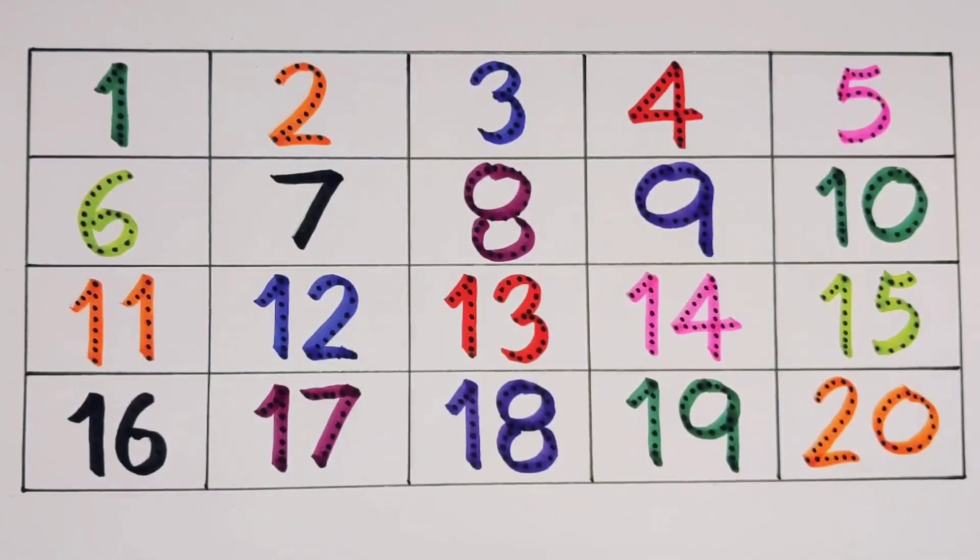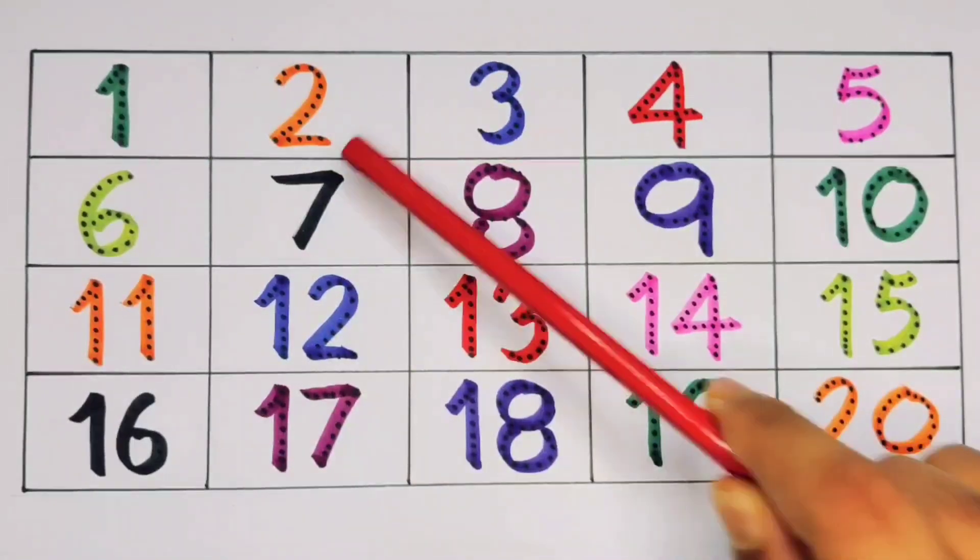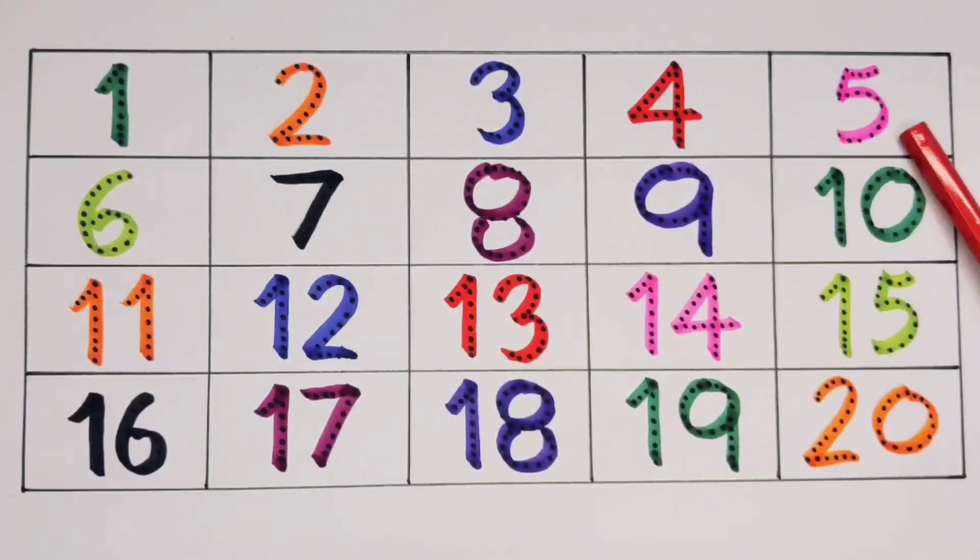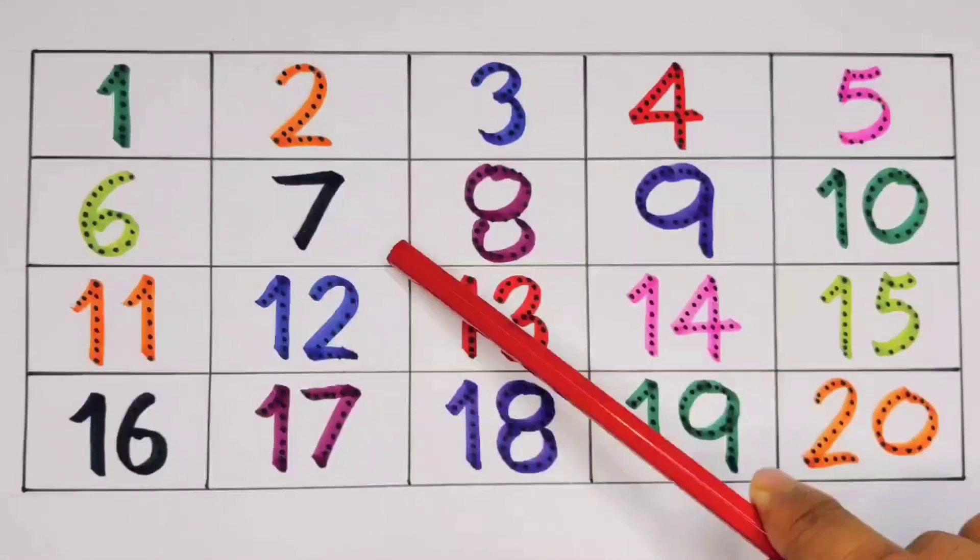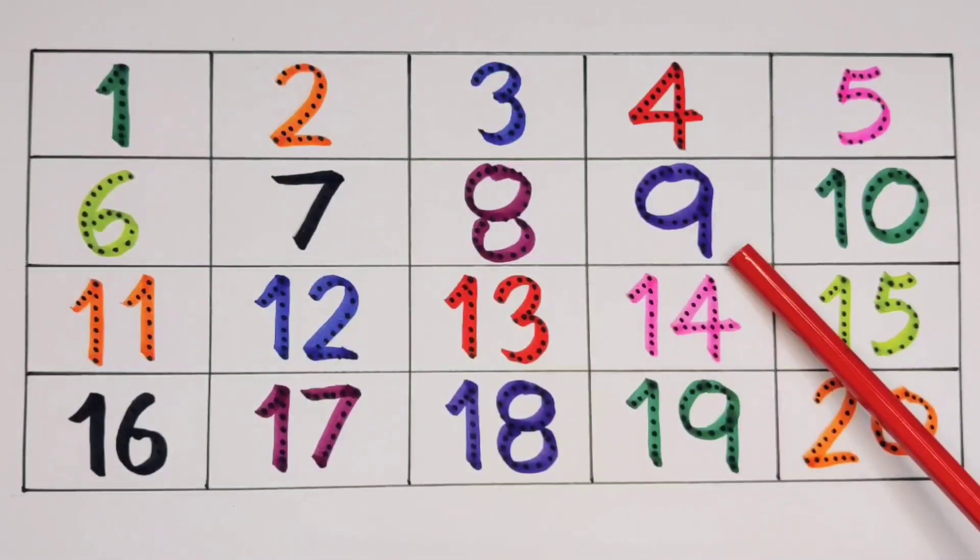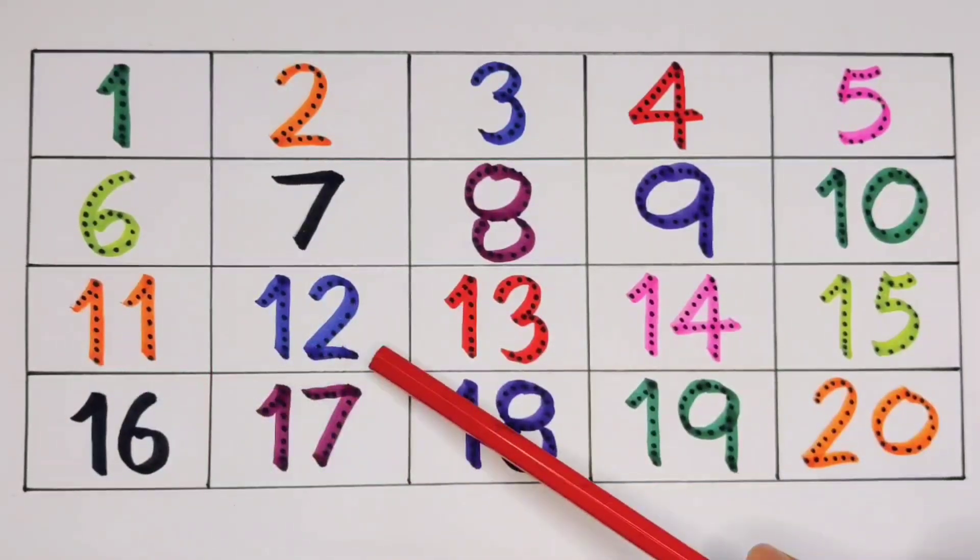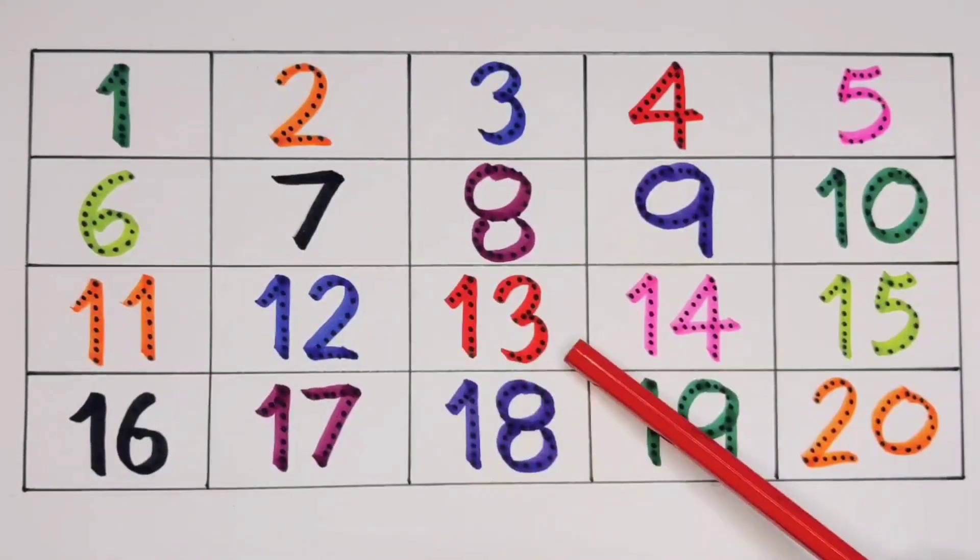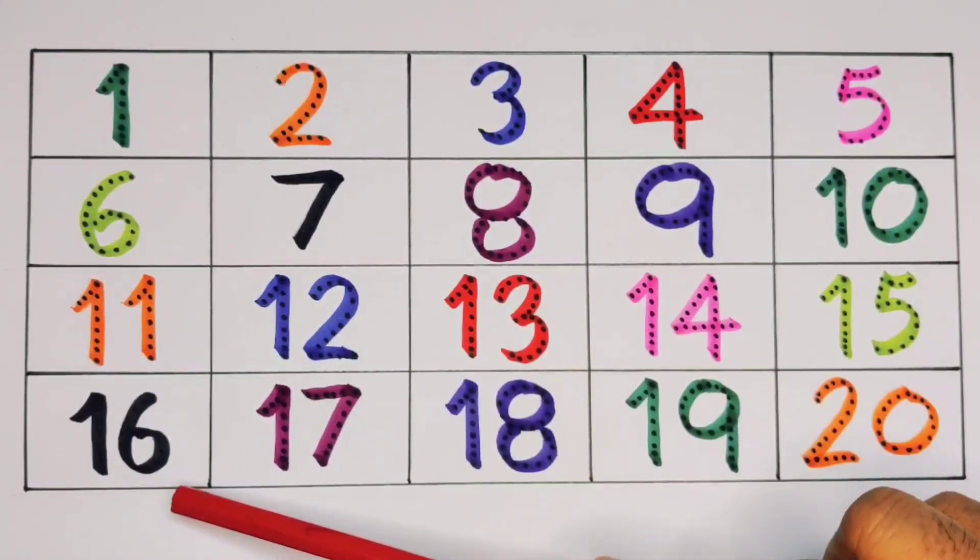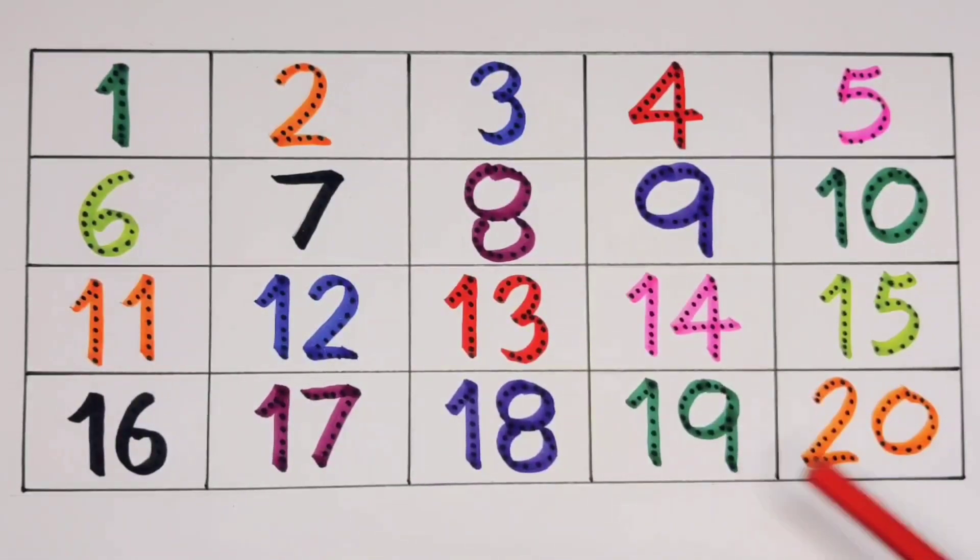What will we learn? We learn: one, two, three, four, five, six, seven, eight, nine, ten, eleven, twelve, thirteen, fourteen, fifteen, sixteen, seventeen, eighteen, nineteen, twenty.